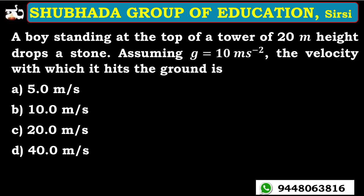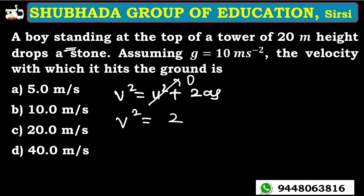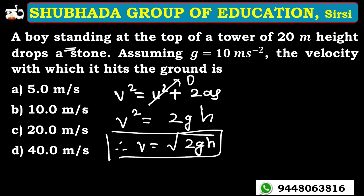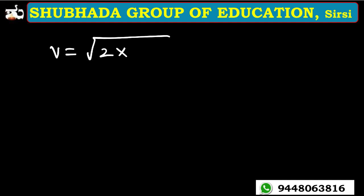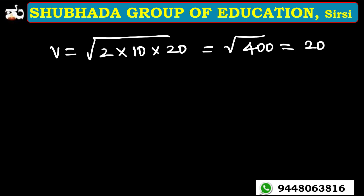A boy standing at the top of a tower of 20 meters height drops a stone. Assuming g equal to 10 meters per second squared, the velocity with which it hits the ground is? Using v squared equals u squared plus 2as, and u equals 0 for a freely falling object, we get v squared equals 2gh. So v equals square root of 2 into 10 into 20, which equals square root of 400, equal to 20 meters per second.